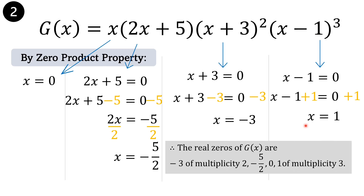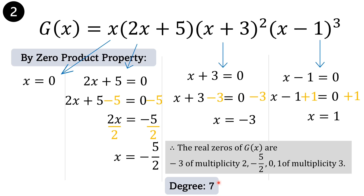Therefore, the real zeros of g of x are: negative 3 of multiplicity 2, because from the binomial x plus 3 squared it appears twice; negative 5 halves appears once; and 1 of multiplicity 3 from the x minus 1 quantity cubed. The degree of the polynomial function is 7 and the number of real zeros are 7.